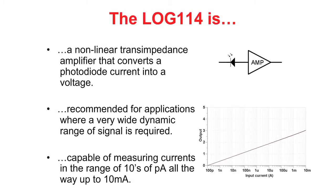In the first part, we'll talk about applications for the LOG114. The LOG114 is a nonlinear transimpedance amplifier designed to convert an input current into an output voltage. Typically, the source of current is from a photodiode. Historically, resistor feedback transimpedance amplifiers have been used to convert the photodiode current to an output voltage when the dynamic range of the input current is anywhere from one to three decades. The LOG114 is recommended when the dynamic range of the input current spans more than three decades.